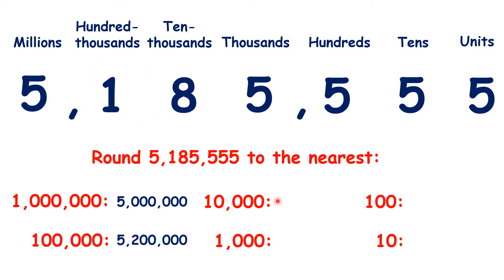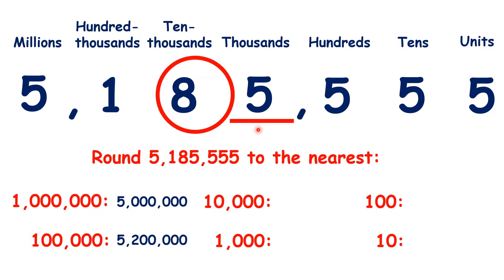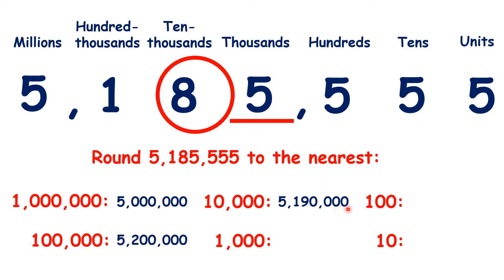Now to the nearest 10,000, we find the place, look to the right, and we're rounding up, so we have 5,190,000. Remember, digits to the left stay the same, so we keep the 5 and the 1, then we add 1 to the place value we're rounding to, and turn digits to the right into zeros.